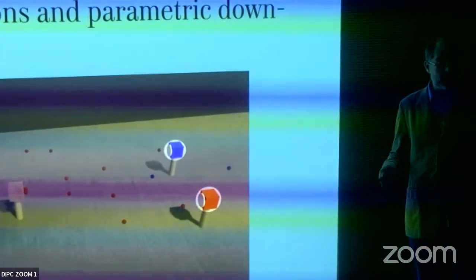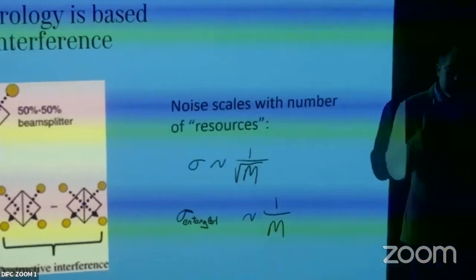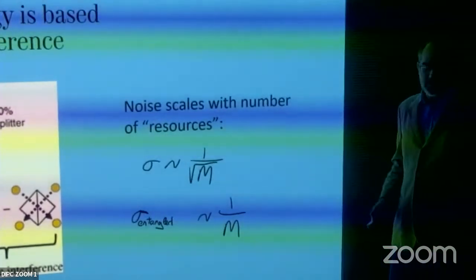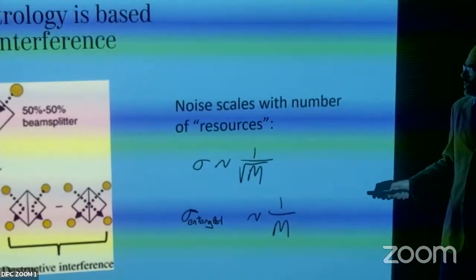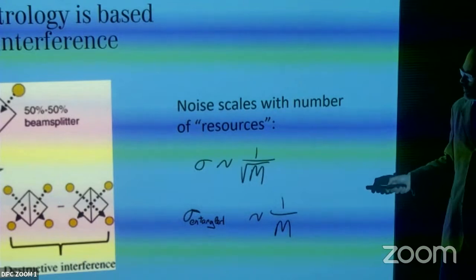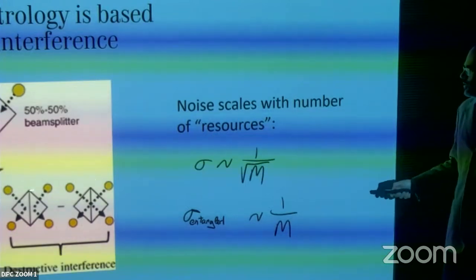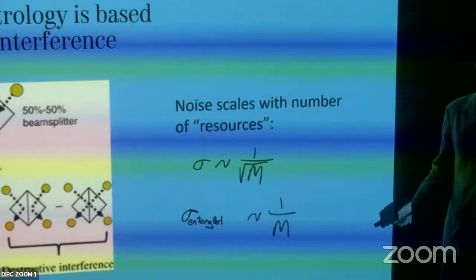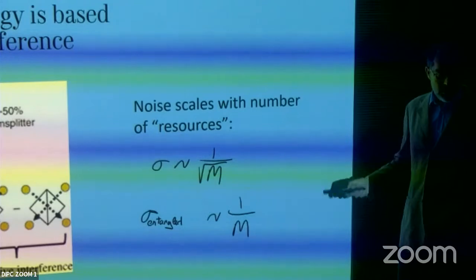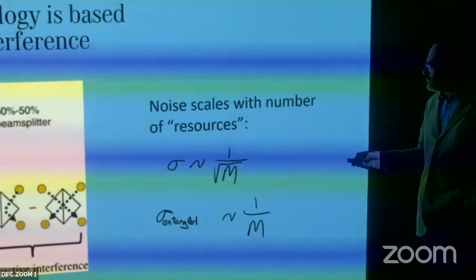We can measure all quantum correlations with high accuracy. Quantum metrology is based on quantum interference. When two indistinguishable photons arrive at a beam splitter, some possibilities cancel by quantum interference — if and only if the particles are indistinguishable or entangled.